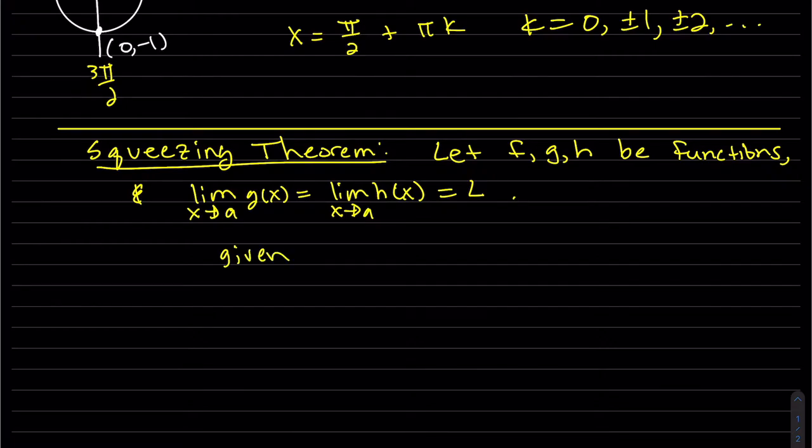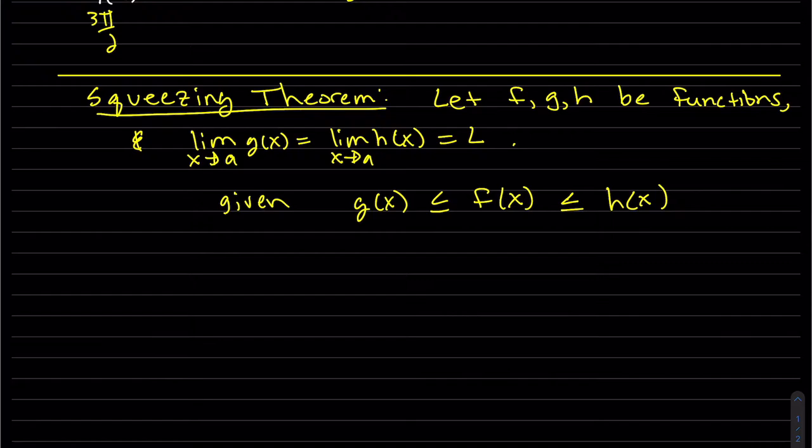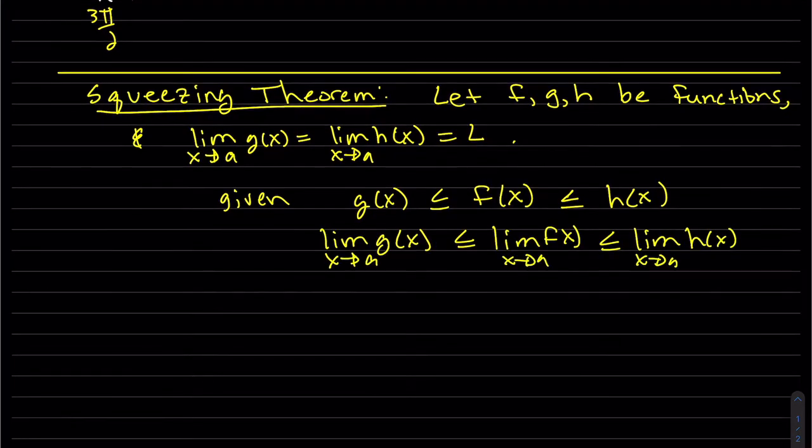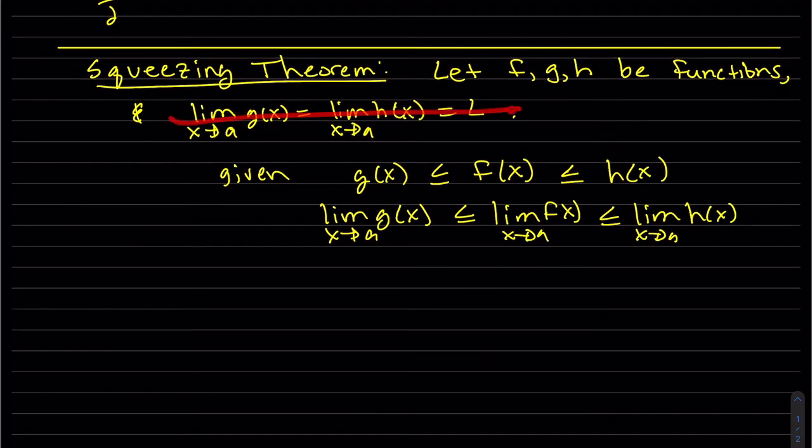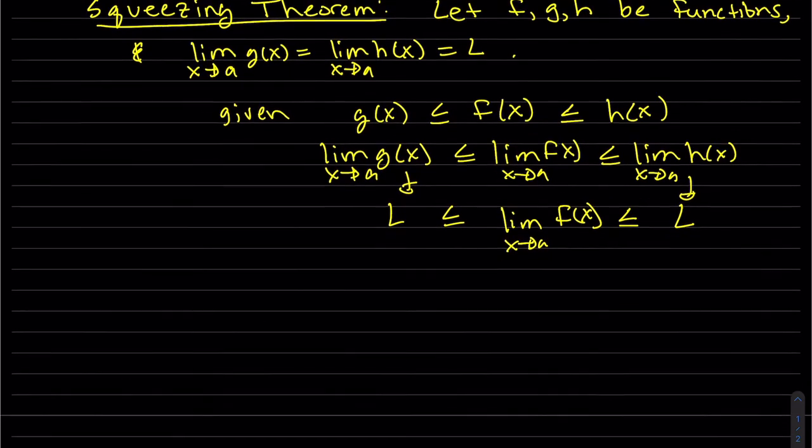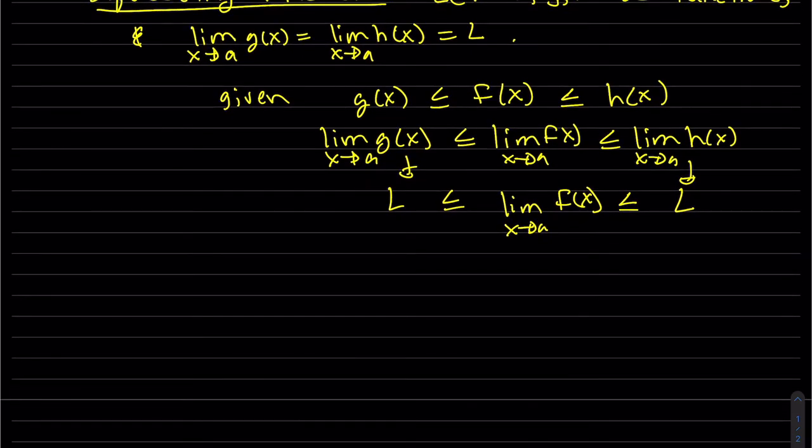So if we're given an inequality where f is in between, so if we're given the three functions have this inequality, then we're allowed to take the limit of each of these. And we do know that two of them are L. So we replace that, given.